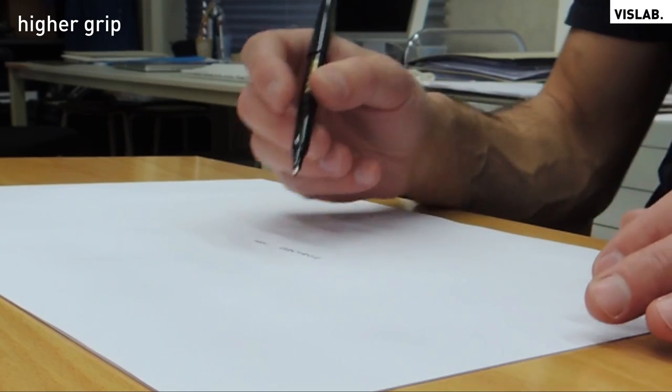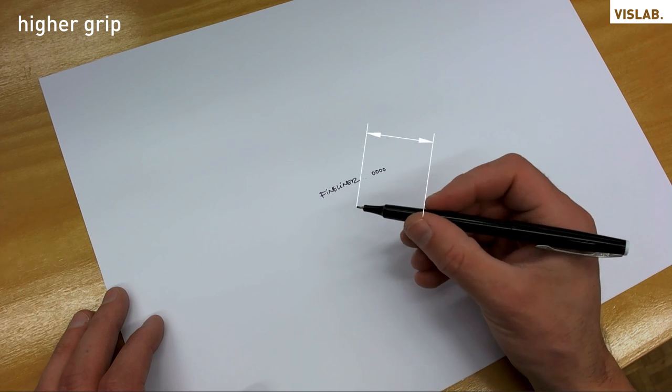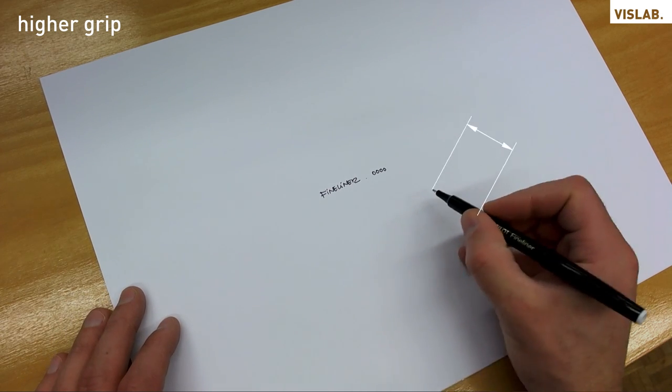By repositioning your grip backwards and relaxing the muscles in your fingers, you will be able to draw much longer and more fluent lines.